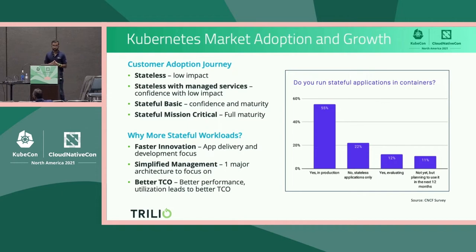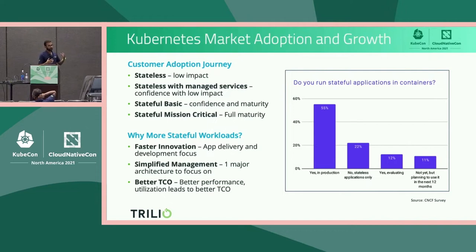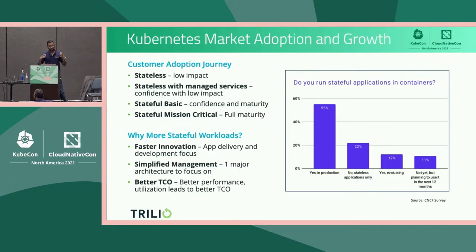That is what we are seeing with Kubernetes now. Your stateful workloads are coming in because you want to have innovation done faster. You want simplified management — if you have your application spread across different silos, management overhead becomes very painful. And from a better TCO perspective, having a single architecture on Kubernetes where your application, metadata, and data all live together is just going to be beneficial all throughout.